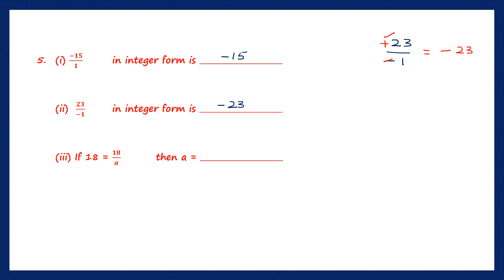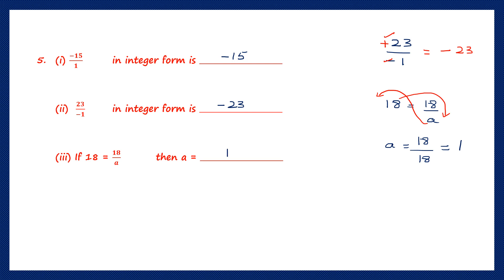Next: if 18 is equal to 18 by A, then what is the value of A? I take A to the left-hand side, making it multiplication as a numerator. Then I bring 18 down to the right-hand side: A equals 18 by 18, and 18 by 18 is 1. So A is equal to 1.